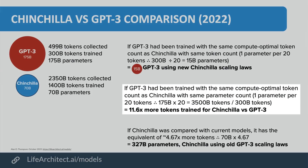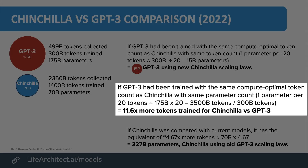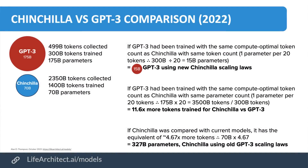Since 70 billion is far more than 15 billion, Chinchilla wins across the board. Furthermore, if GPT-3 had been trained with the same compute-optimal token count at its actual 175 billion parameters, it should have had 3,500 billion tokens — 3.5 trillion tokens, or 11.6x more than they actually used. Yet it is outperforming Google PaLM and every other model — really quite incredible.